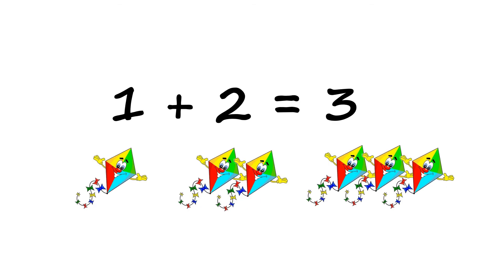Now let us look at this example. 1 plus 2 is equal to 3. So I have one kite. Then I add two more kites. Now when I put all these kites together I get 3 as my answer.